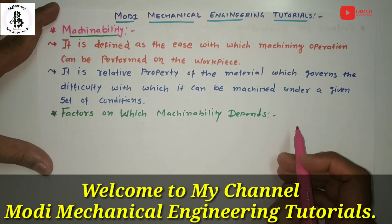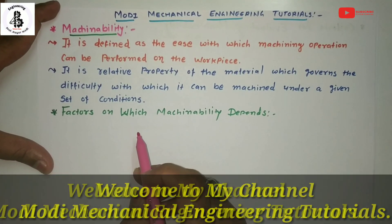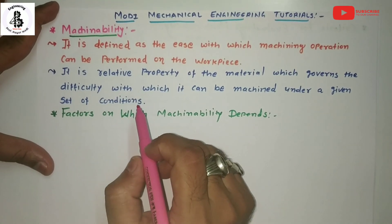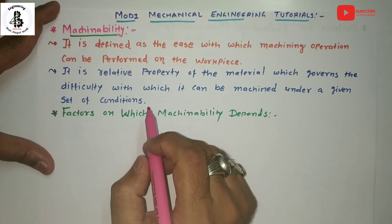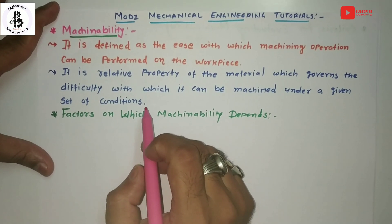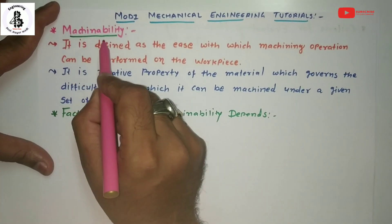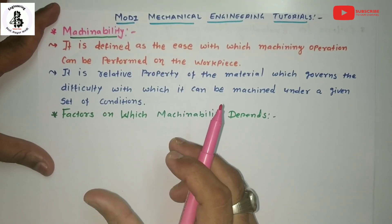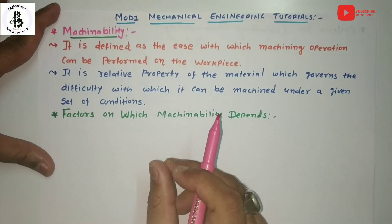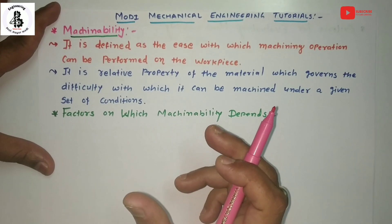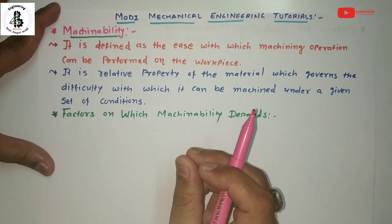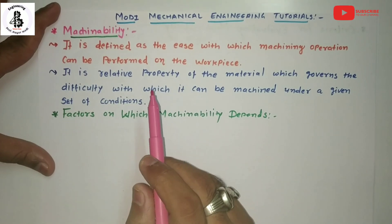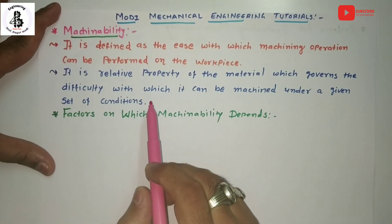Welcome to Modi Mechanical Engineering Tutorials. In this video I would like to explain about the most important part of any machining characteristics, which is called machinability. This term is generally used in production or manufacturing, and it has great importance in the field of metal cutting.